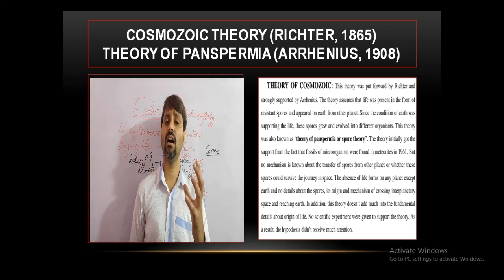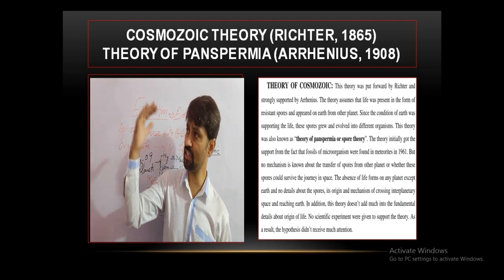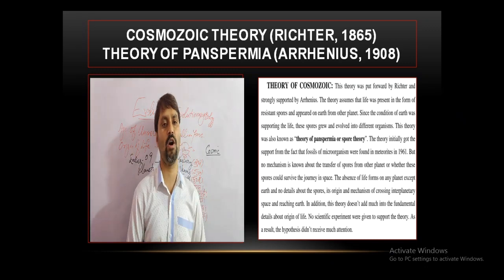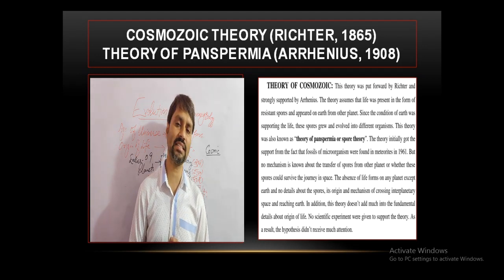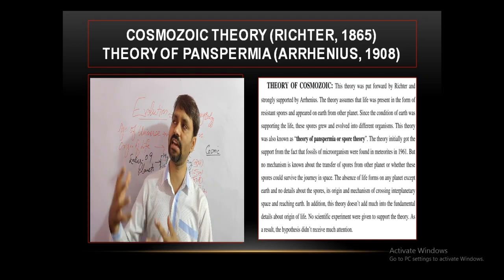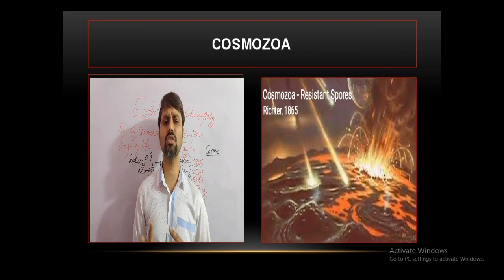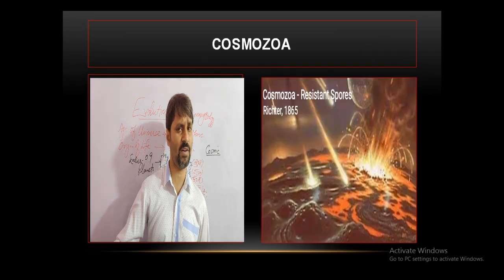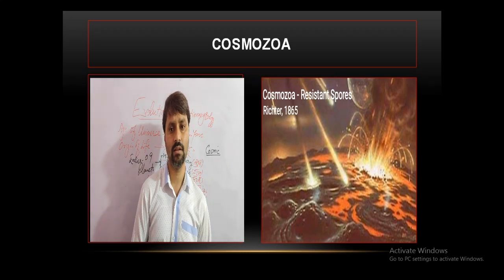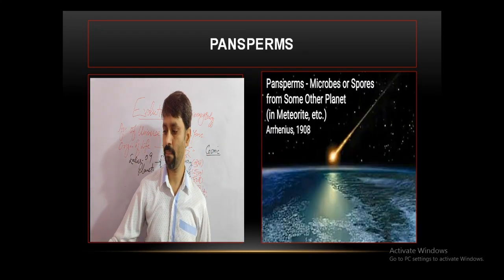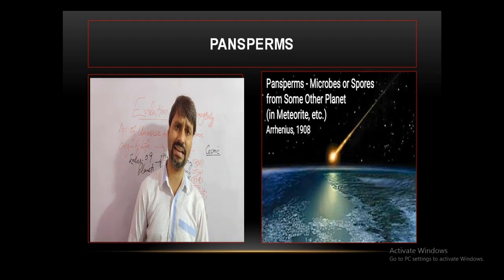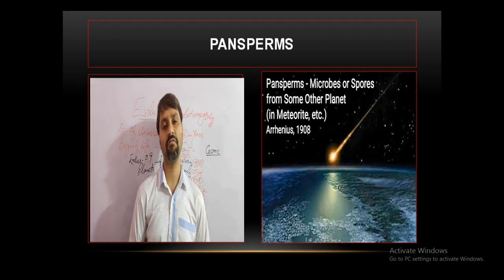The Interplanetary Theory suggests that life came from some other planet. Richter proposed the Cosmozoa Theory in 1865, saying that resistant spores came from another planet to this earth and formed life. Arrhenius in 1908 proposed the Theory of Panspermia, stating that panspermia — microbes or spores — came from other planets, perhaps in the form of meteorites, and formed various life forms on this earth.